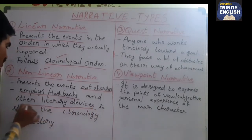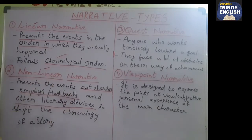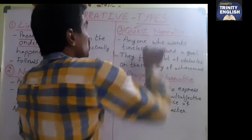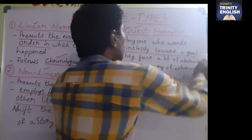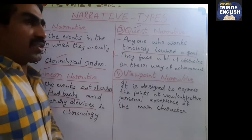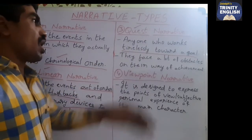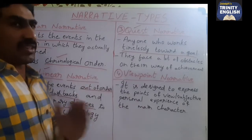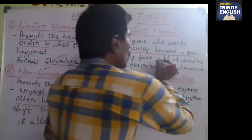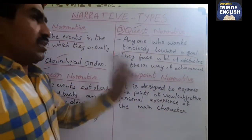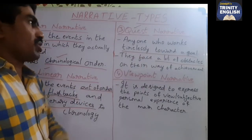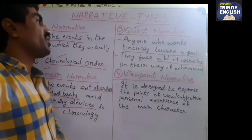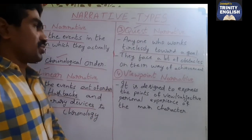The third type is quest narrative. In a quest narrative, the protagonist or main character works tirelessly towards a particular goal. The main character faces a lot of obstacles on their way to achievement. When the main character faces many obstacles in achieving their goal or aim, we call it a quest narrative. It is presented with a lot of difficulties, trials, and tribulations of the main character.